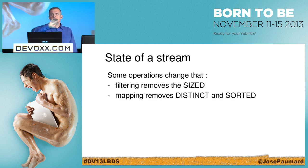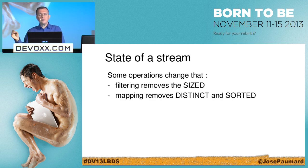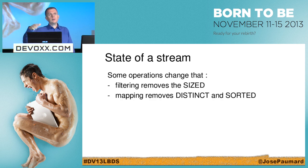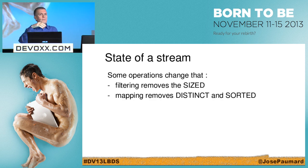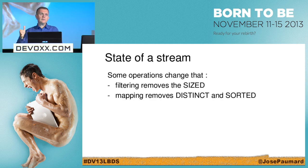Some operations will change the state of the stream. For instance, filtering: if I filter my list of persons I can't guess how many persons will pass through the filter, so the 'sized' flag is set to false. Mapping removes the 'distinct' flag — if I map persons to their ages, I may have duplicate ages, so it's no longer a distinct list. The same applies to 'sorted'.